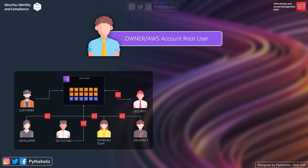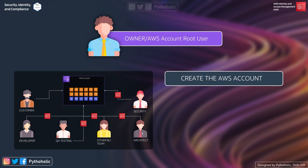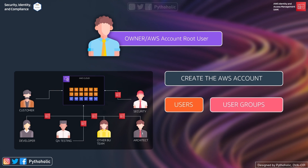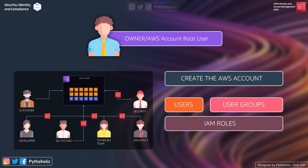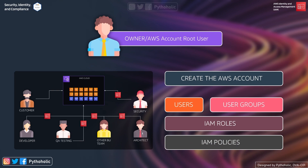You need to create IAM roles to assume and perform operations on resources, and for other users to be able to make use of services on your AWS account. You also need to create IAM policies to define the permission levels — what level of operations you can perform on a particular resource. This is the whole gist of making use of IAM.